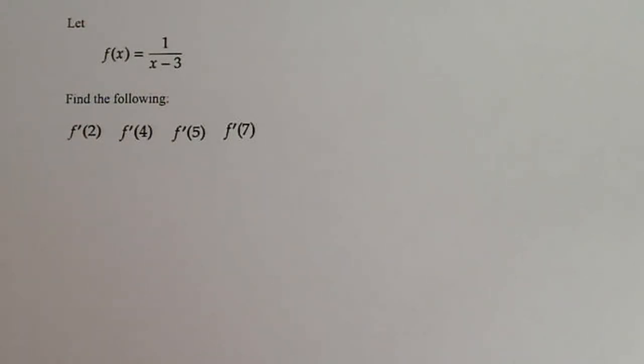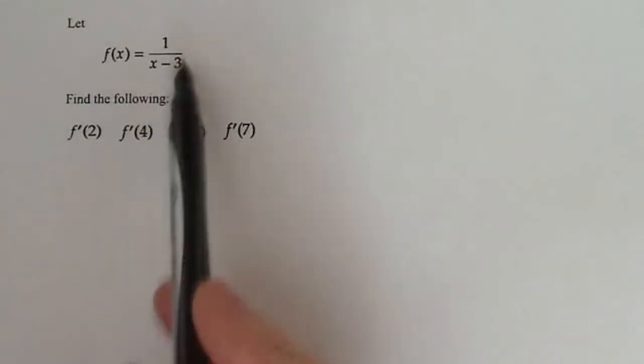Okay, this is a calculus one question, and in my class right now we're working on the early stages of derivatives. So this is a problem, a typical problem that we'll get. So we're given this function f of x equals one divided by x minus three, and we're supposed to find the following. Now we don't have any shortcuts, so the only thing that we can use is the limit definition of the derivative.